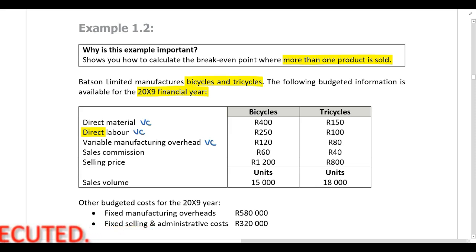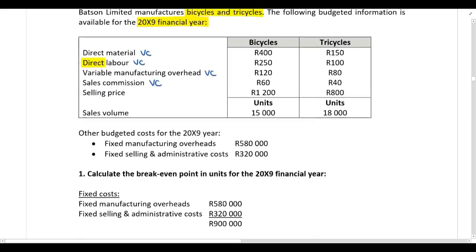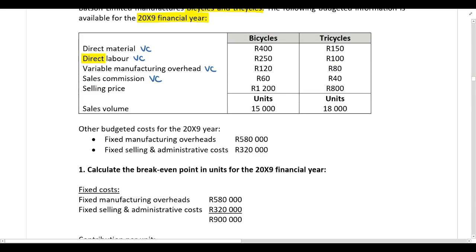Sales commission varies with the number of units sold, so that is also a variable cost. We then have the selling price per unit and the sales volume. For other budgeted costs, we have fixed manufacturing overheads — obviously fixed — and fixed selling and admin costs, which are also obviously fixed.